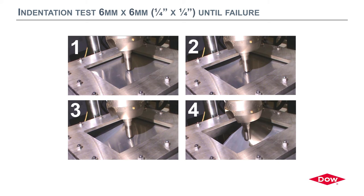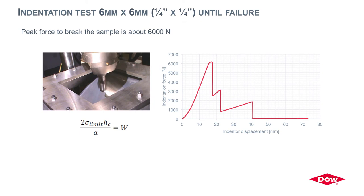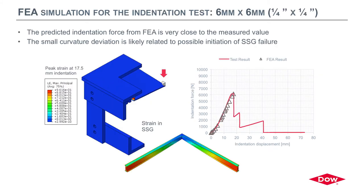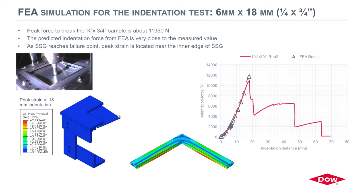As you push and increase the indentation displacement, you eventually reach failure. The force increases to a maximum, then we see a first failure, then a second, and further failures until final failure. The peak force to break the 6×6 joint was about 6,000 newtons, very close to the FEA prediction. The FEA also shows this 6×6 joint is mainly acting in tension. For the 18×6 joint, we see a peak force of about 12,000 newtons. The material model prediction is very accurate, and peak strain is observed near the inner edge of the SSG — which is where failure occurs.